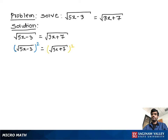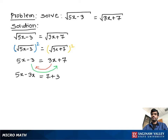Then we can write 5x minus 3 equals 3x plus 7. Now we bring the x terms to the left side and the constant terms to the right side. 3x comes to the left side as negative 3x, and negative 3 goes to the other side as positive 3. So we write 7 plus 3.